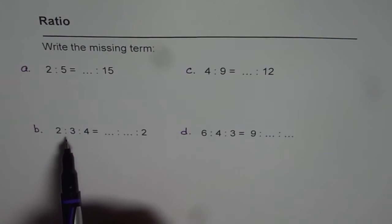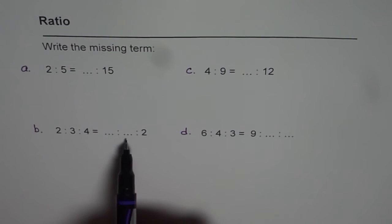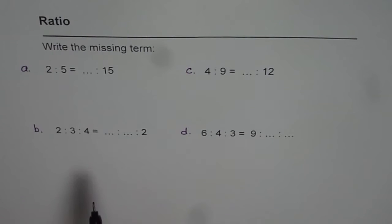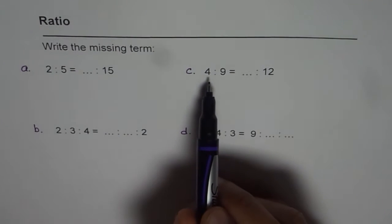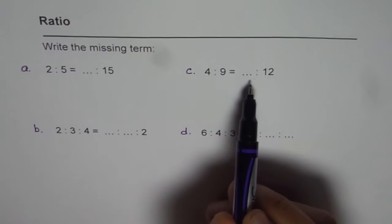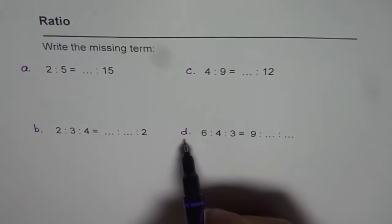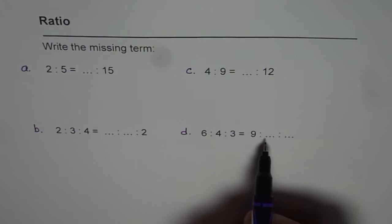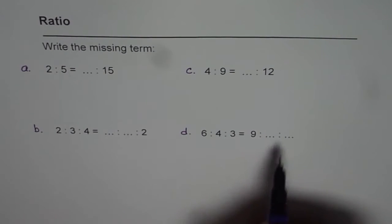B is 2 is to 3 is to 4 equals to the two blank spaces and then 2. C: 4 is to 9 equals to what is to 12, and D is 6 is to 4 is to 3 equals to 9 is to what is to what.